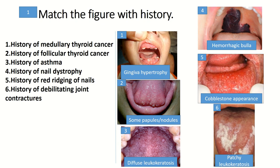A history of medullary thyroid cancer could be indicative of MEN2B. MEN stands for multiple endocrine neoplasia and has three forms: 1, 2A, and 2B. In MEN2B we have the triad of medullary thyroid cancer, pheochromocytoma, and multiple mucosal neuromas. So figure 2, presenting with papules and nodules on the anterior of the tongue, could be matched with history 1.